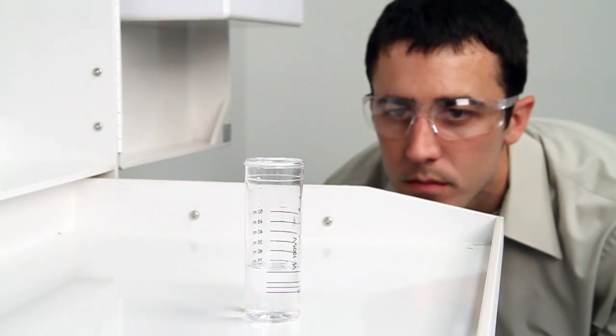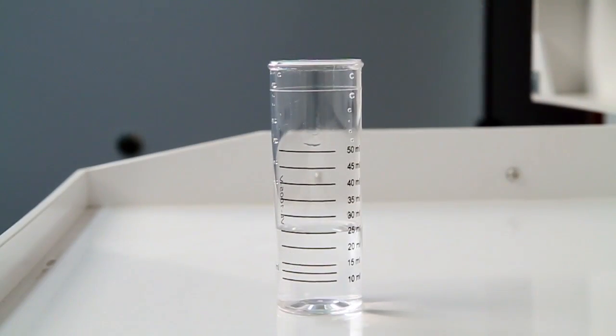When performing a drop count titration, a white background can provide contrast to better see the color changes. A cabinet tray or a white paper towel can provide that contrast.